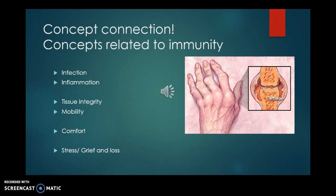There are many related concepts, but just to name a few: infection and inflammation — because inflammation is part of your immune response — tissue integrity, mobility, comfort, stress, and grief and loss. You could probably connect most concepts back to immunity in one way, shape, or form.